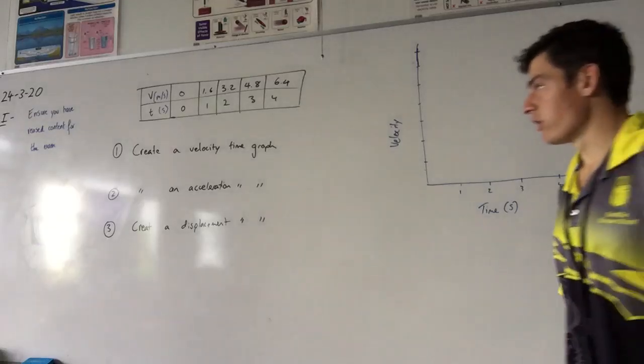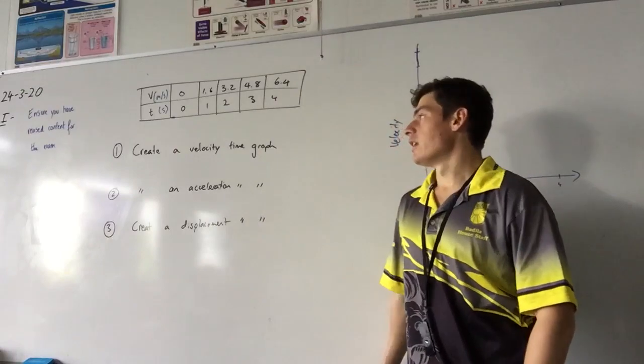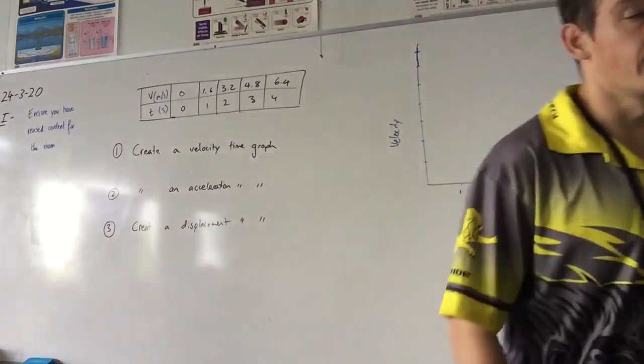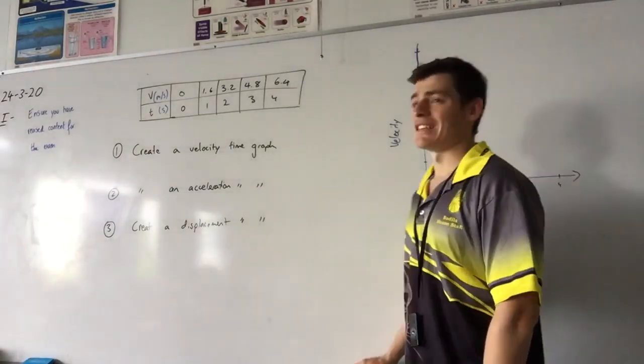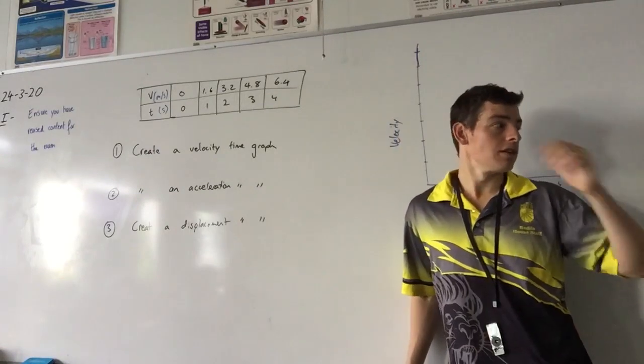So looking at question one, we've got an object we can assume is being dropped on the moon and we've been asked to create a velocity time graph. What can we say about the motion of that object, or the velocity of that object? Is it increasing? Is it decreasing? It's speeding up.